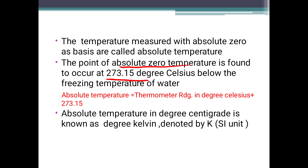Absolute temperature is measured by the formula: thermometer reading in degrees Celsius plus 273.15. That gives the absolute temperature. Absolute temperature in degrees Celsius is known as degrees Kelvin — that is the SI unit.